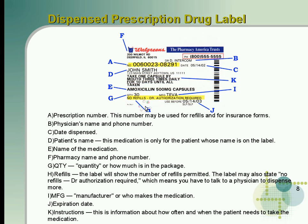'Doctor authorization required' means you have to talk to a physician to dispense more. I — the manufacturer; in this case, Teva. J — the expiration date. And K — the instructions, which tell the patient how often to take the medication and by what route. So in this case: take one capsule by mouth three times daily for ten days until all taken.